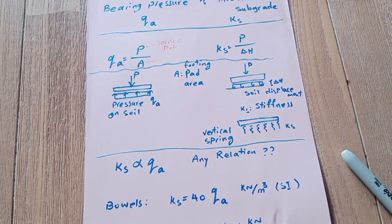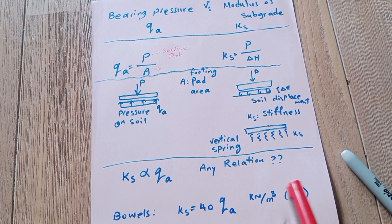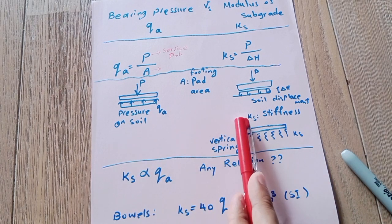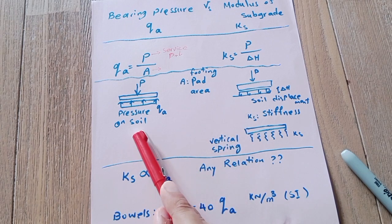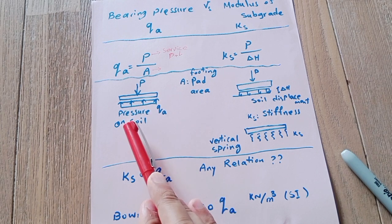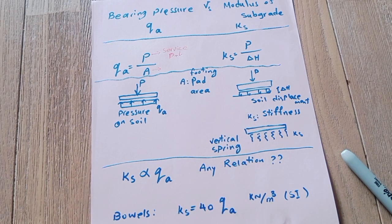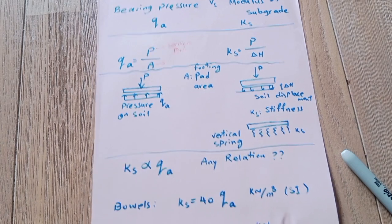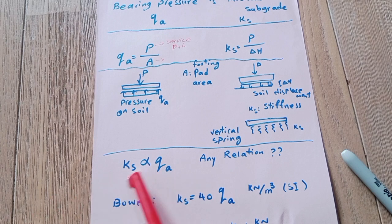The critical or confusing part is that some software uses qa, some software uses ks. The other problem is that most investigations by geotechnical engineers give the parameter qa, bearing pressure or allowable bearing pressure of the soil, and it is very rare to display what the subgrade modulus is. So the question is: is there any relationship between these two? If we have one, can we calculate the other one?